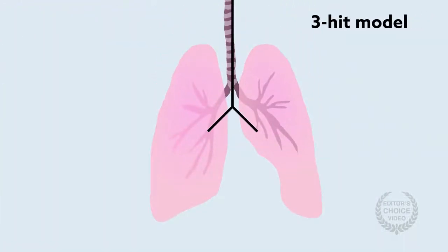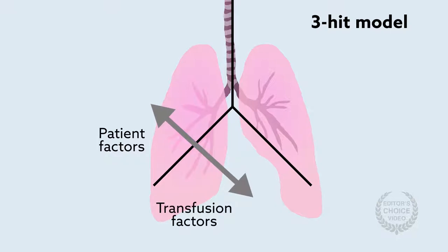The authors propose that perioperative TRALI operates under a three-hit model. As in the classic two-hit model, patient factors comprise the first hit, predisposing patients to developing TRALI once they receive a transfusion, which is the second hit. Surgery, or hit three, then combines additively or synergistically with the two other hits, making perioperative TRALI that much more likely.